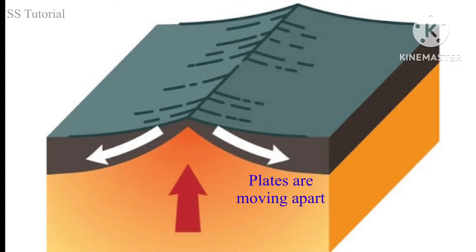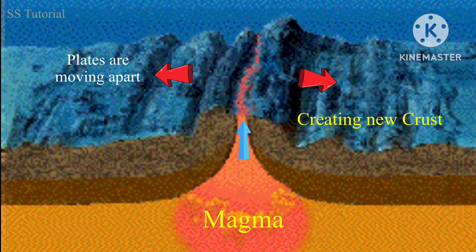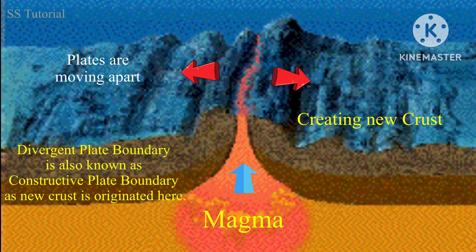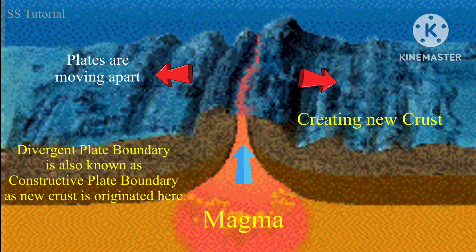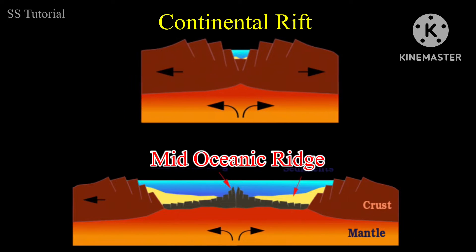Where two plates are moving apart from each other, they form a plate boundary between them which is known as a divergent plate boundary. As two plates are moving apart, a gap forms between them through which magma rises up and creates new oceanic crust. Because this type of plate boundary creates new crust, it is also known as a constructive plate boundary. These types of plate boundary can be seen in the mid-Atlantic Ocean. Divergence of two plates results in geographic features like oceanic ridges and faults.